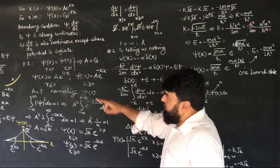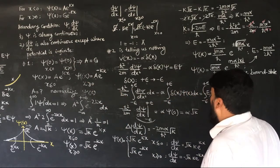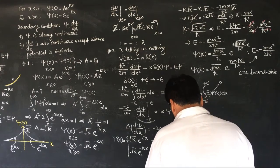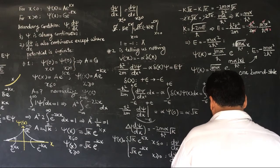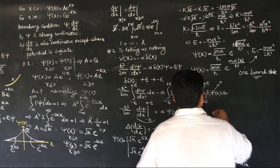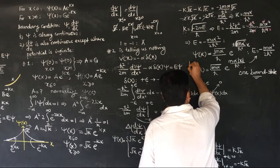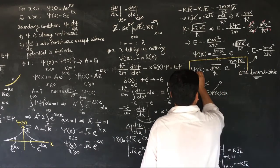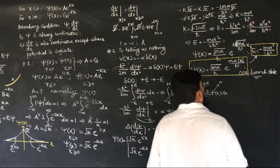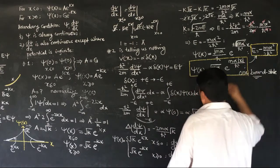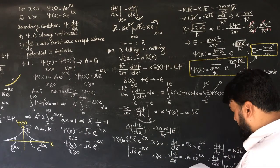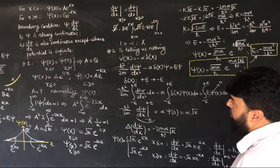The bound states we started from have actually ended up with only one bound state for this system. So, the delta function potential has only one bound state. We found its wave function and the energy associated with it. Next, we will start with the scattering states of this potential.